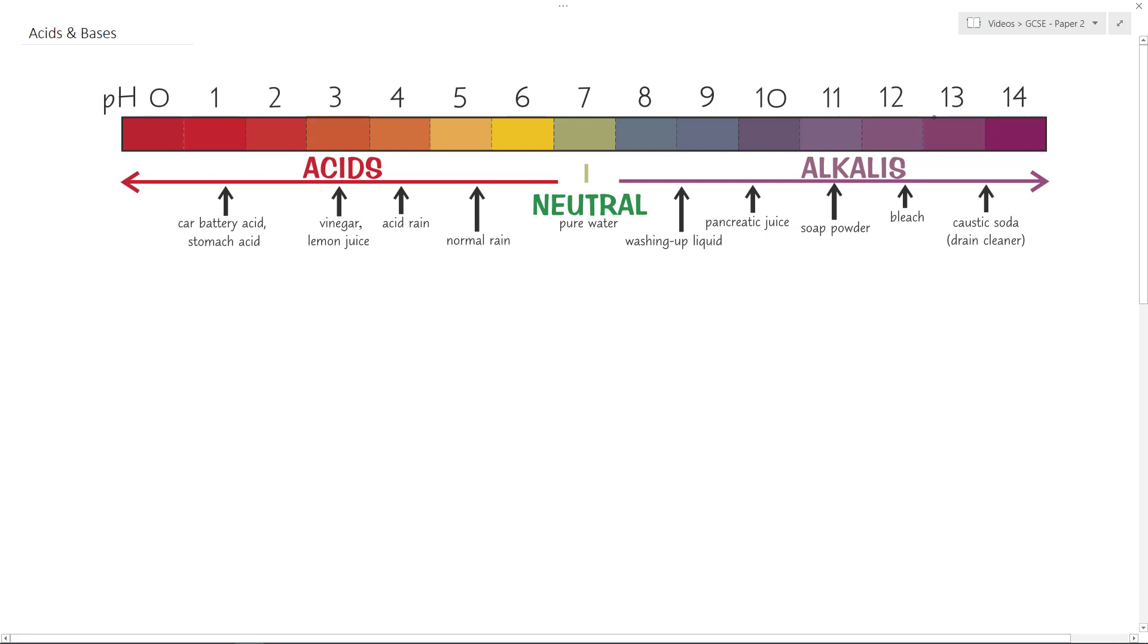As I say, 0 through to 14. You can see that acids are everything that have a pH less than 7. Alkalis are everything that have a pH greater than 7. And the key thing is here, around neutral, we've got pH 7.